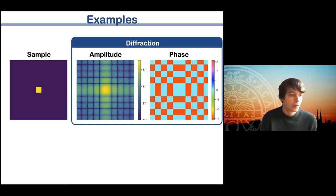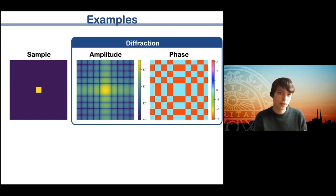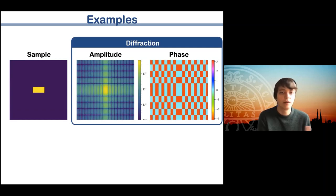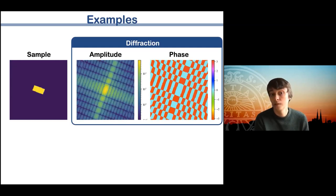For a square, we get similar behavior but the radial symmetry is broken since we have vertical and horizontal edges. The top and bottom edges interfere, giving a strong vertical streak in the pattern, and similarly for the horizontal streak from the left and right edges. If we make the square wider along x, the Fourier transform becomes narrower on the x-axis. The Fourier transform is also rotation invariant: if we rotate the sample, the diffraction rotates the same way.